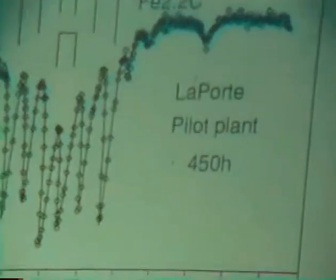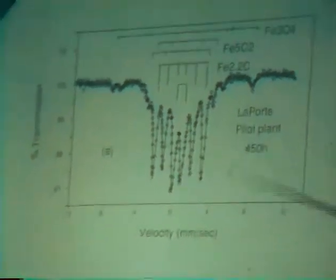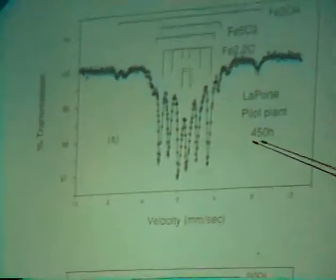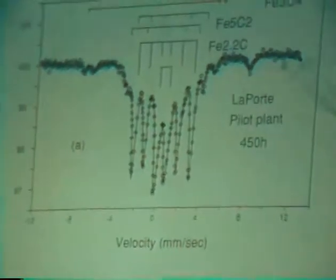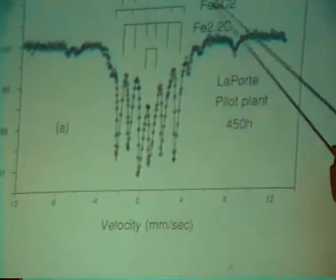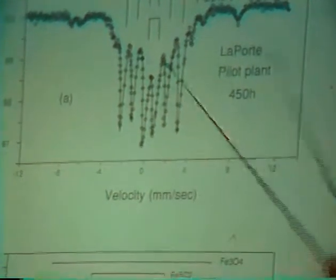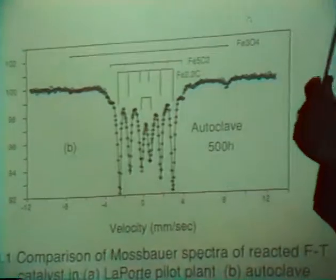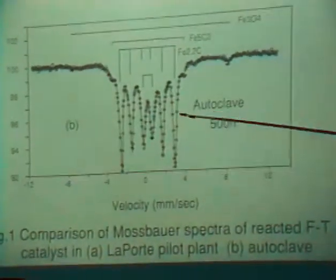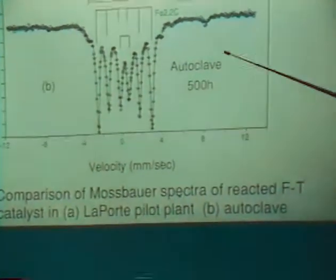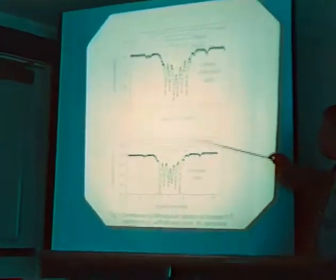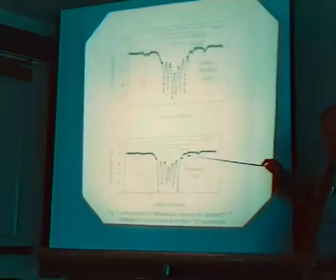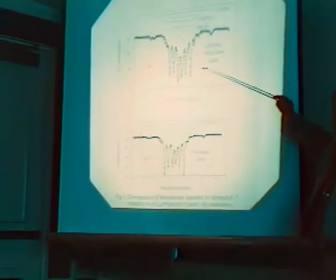Here are the typical Mössbauer spectra of the catalysts. This spectrum is from the catalyst which was taken out at 4 and 15 hours of time on stream. You notice the contents are mostly epsilon carbide, chi-carbide, and magnetite. Now, the catalyst from the same batch that was used for the Laporte was used in an autoclave at UOP. This is the spectrum that we get. You see they are very similar, both of them mostly carbide, except that here in an autoclave you have higher percentage of epsilon prime carbide as compared to the Laporte demonstration run at that time.